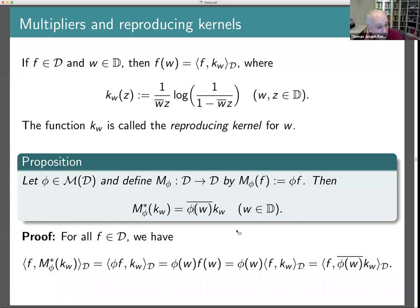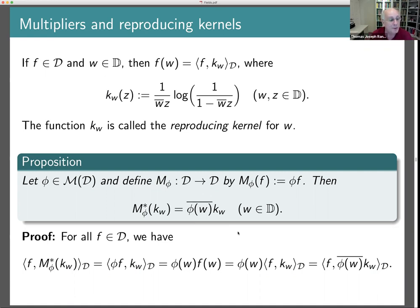What's really remarkable is that, in a sense, this characterizes multipliers: if you start with a bounded operator on your reproducing kernel Hilbert space whose eigenvectors are the reproducing kernels, then running the argument backwards shows this operator must be the adjoint of multiplication by some multiplier. This gives a way of getting your hands on multipliers that's really rather simple, doesn't depend on explicit characterization, and is an extremely powerful technique based on this very simple proposition.